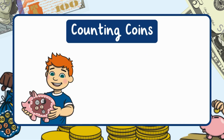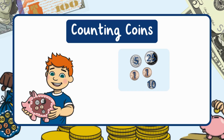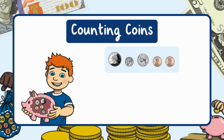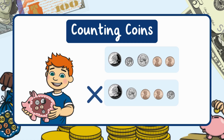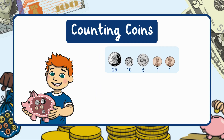Now that we know each coin's value, let's add them up. Each coin represents a number and we add them together to find the total amount. We always start with the coin that's worth the most and count up. Let's arrange the coins from the highest value to the lowest. Remember, the biggest coin isn't always worth the most — focus on the amount of money each coin represents.